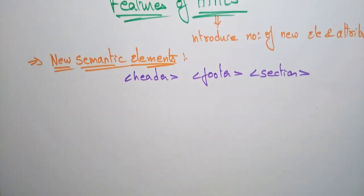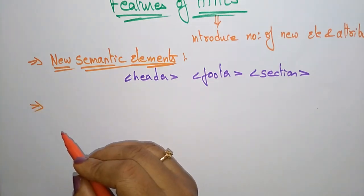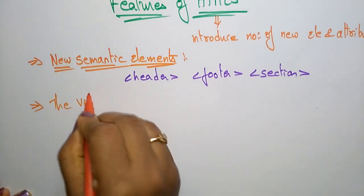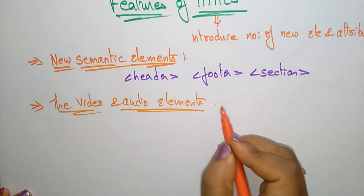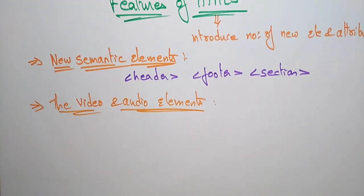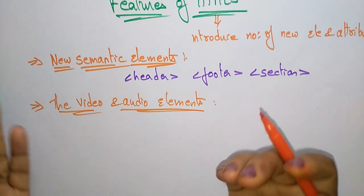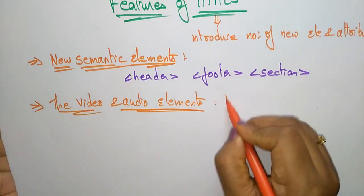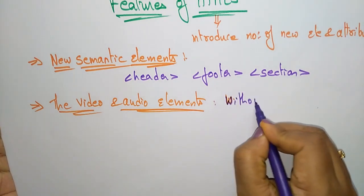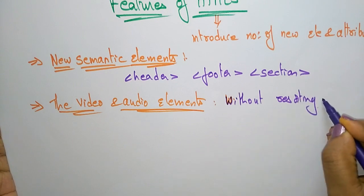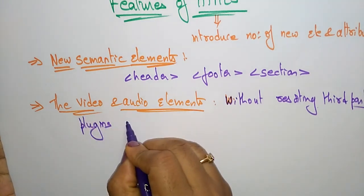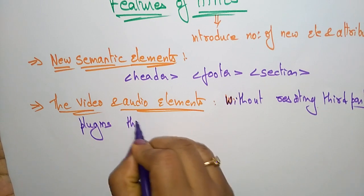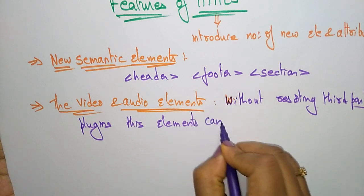The next feature is the video and audio elements. HTML5 has embedded audio and video elements for media playback, which can be embedded on your web page without resorting to third-party plugins. Without the help of third-party plugins, these audio and video elements can be embedded directly on your web page.